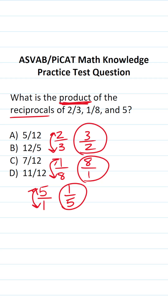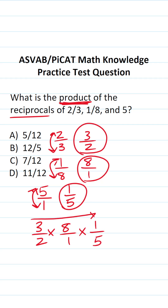Now we want to find the product of all these reciprocals, so we're just going to multiply them together: three over two times eight over one times one over five. When you multiply fractions, you just multiply straight across.